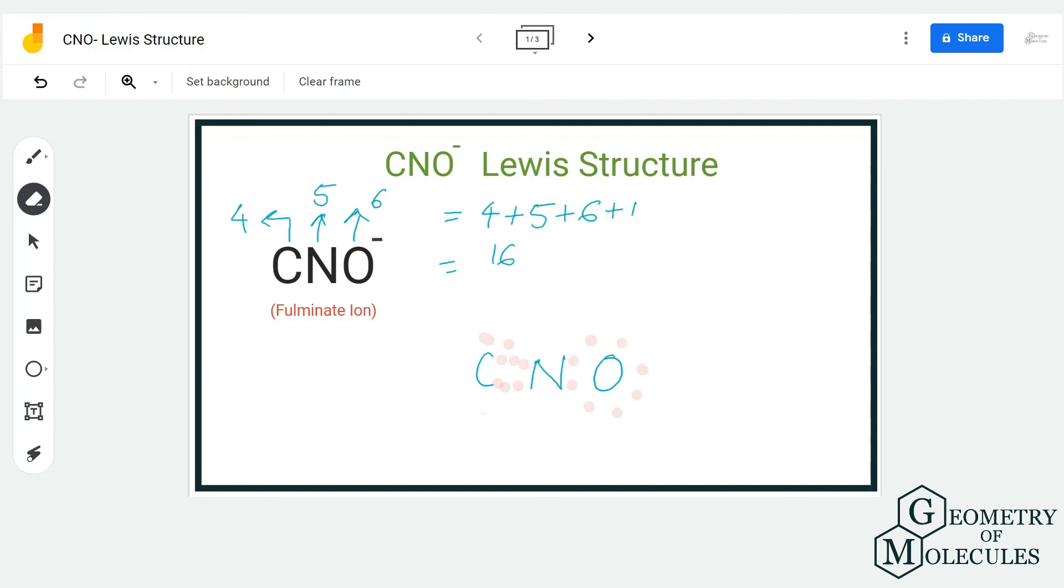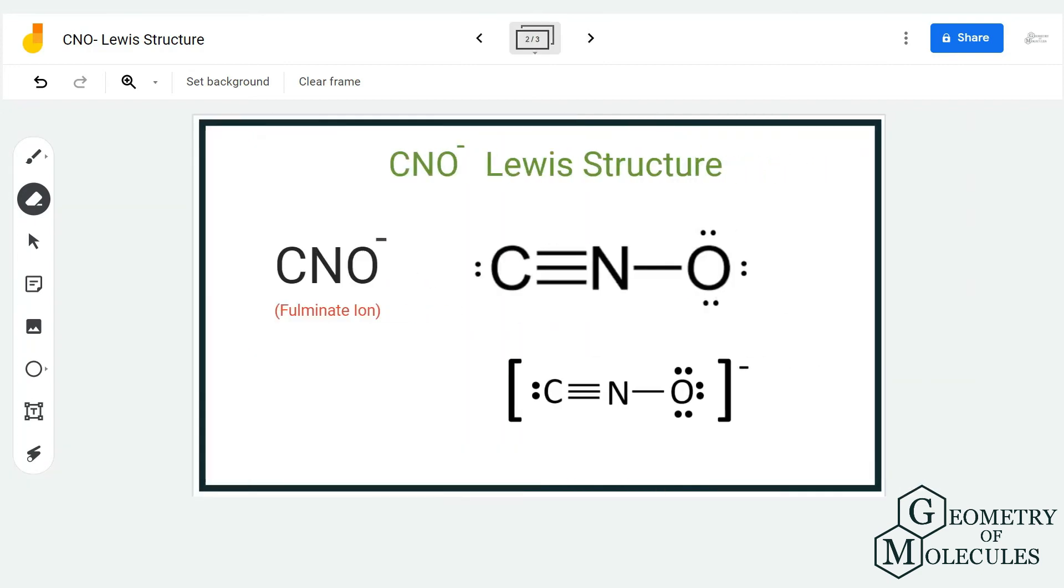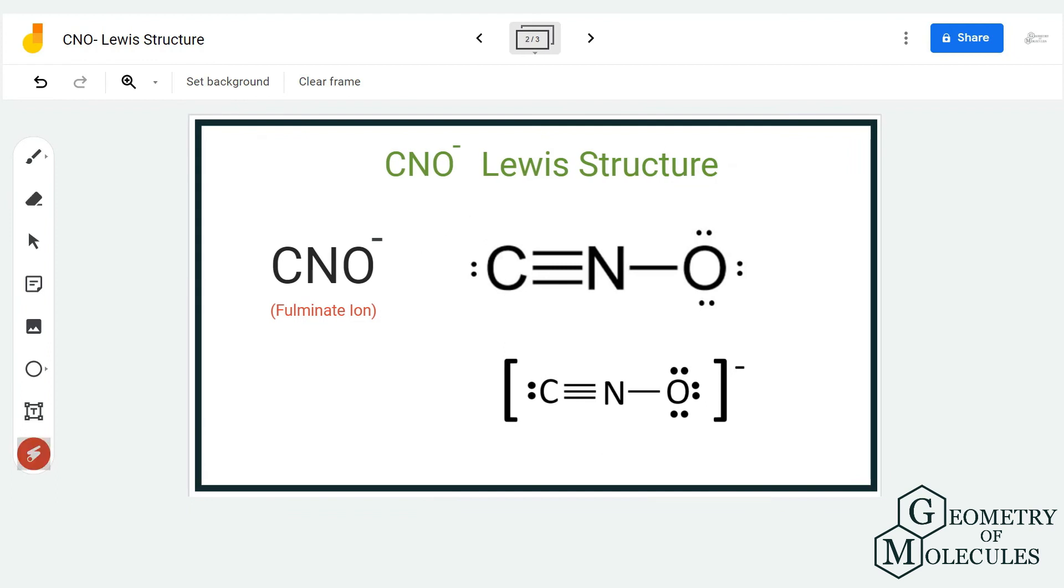Now carbon has eight valence electrons, nitrogen has eight, and oxygen has eight. Since all atoms have a complete octet, this is the correct Lewis structure for CNO minus ion.